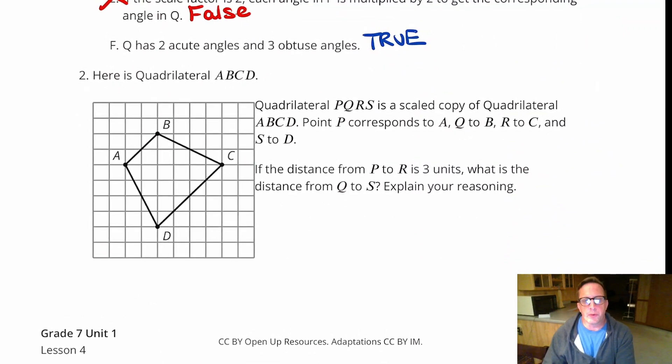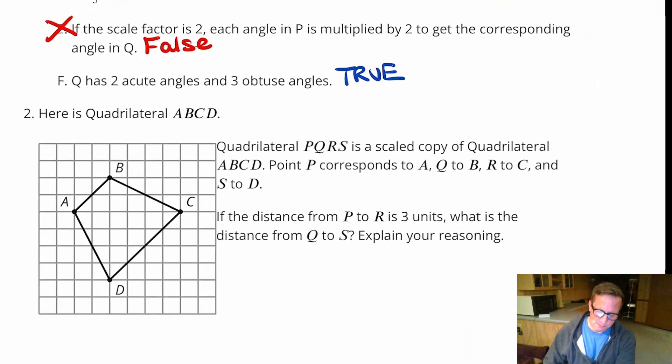All right, for number two, it says, here's quadrilateral ABCD. Quadrilateral PQRS is a scaled copy of quadrilateral ABCD. Point P corresponds to A, Q to B, R to C, and S to D.